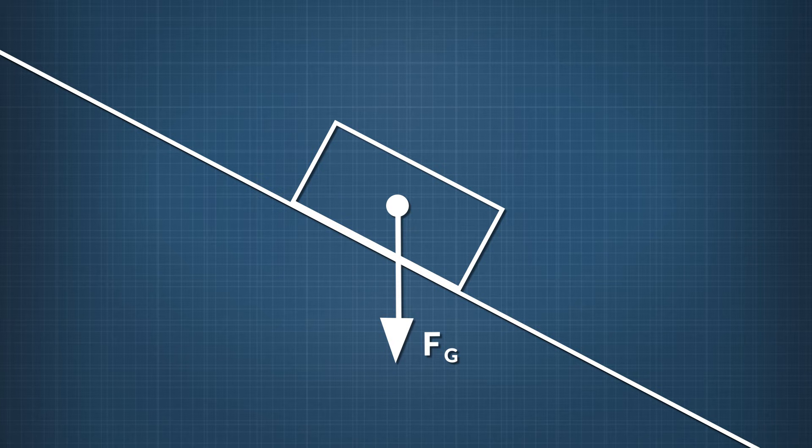What other forces act on the block? There's the normal force, but which way does it point? Remember the normal force always points perpendicular to the surface exerting the force. In our case, that's the ramp, which pushes the block away from its surface. So the normal force points like this.